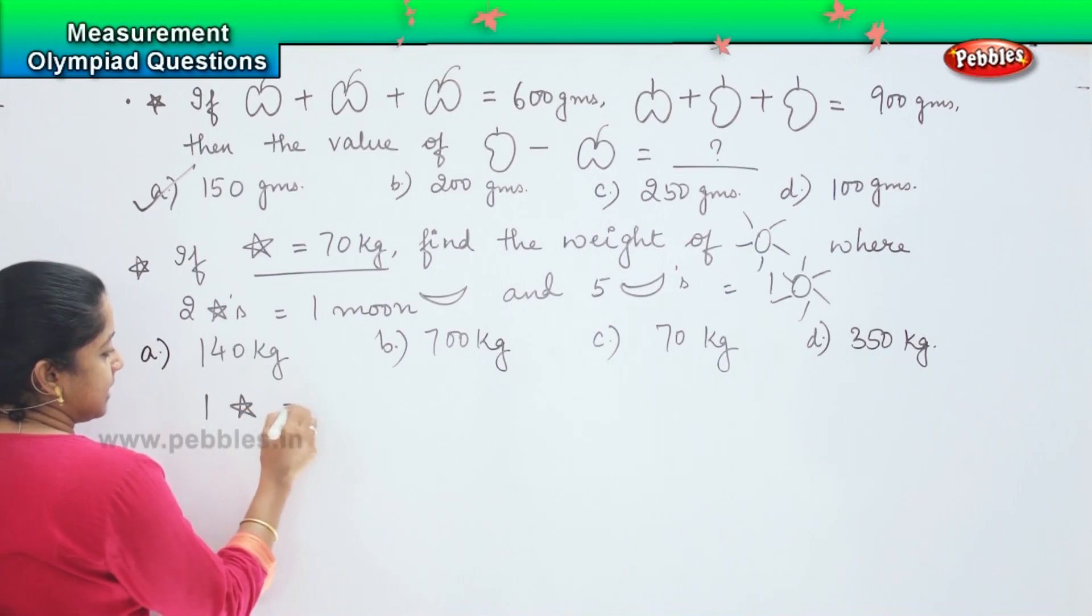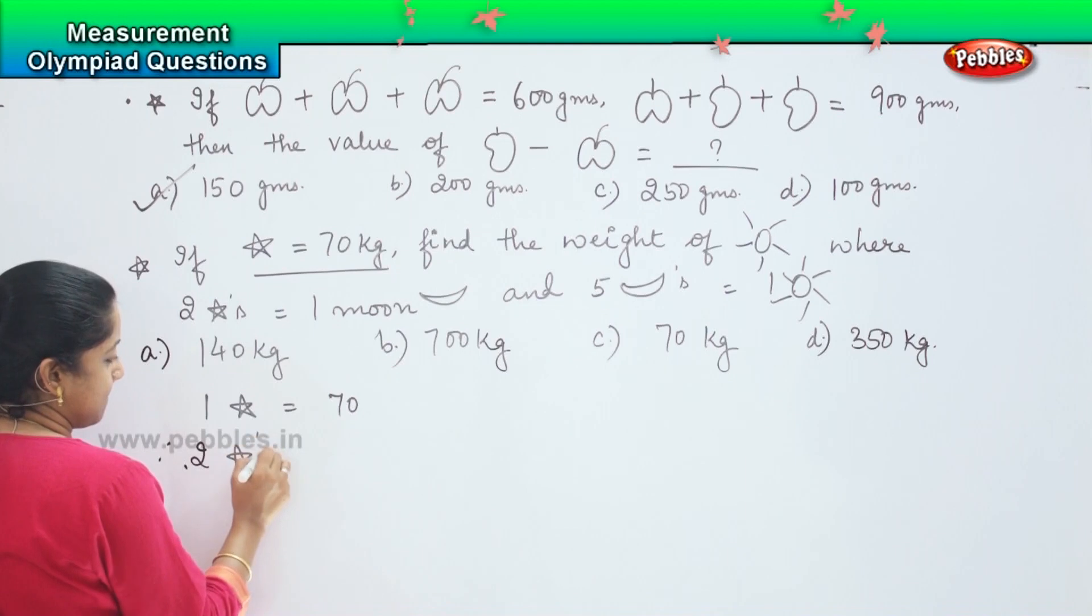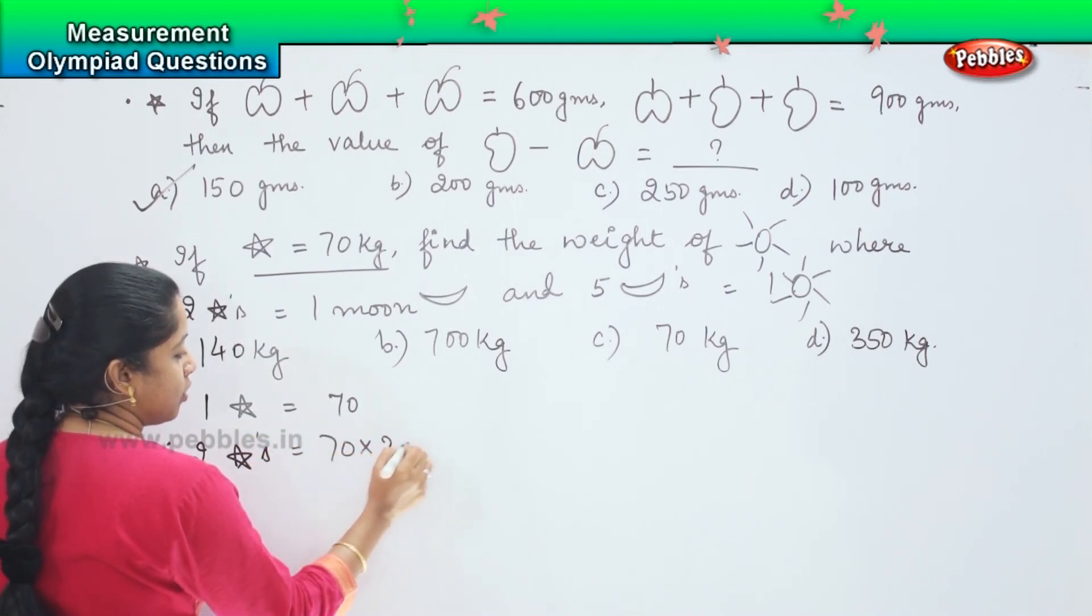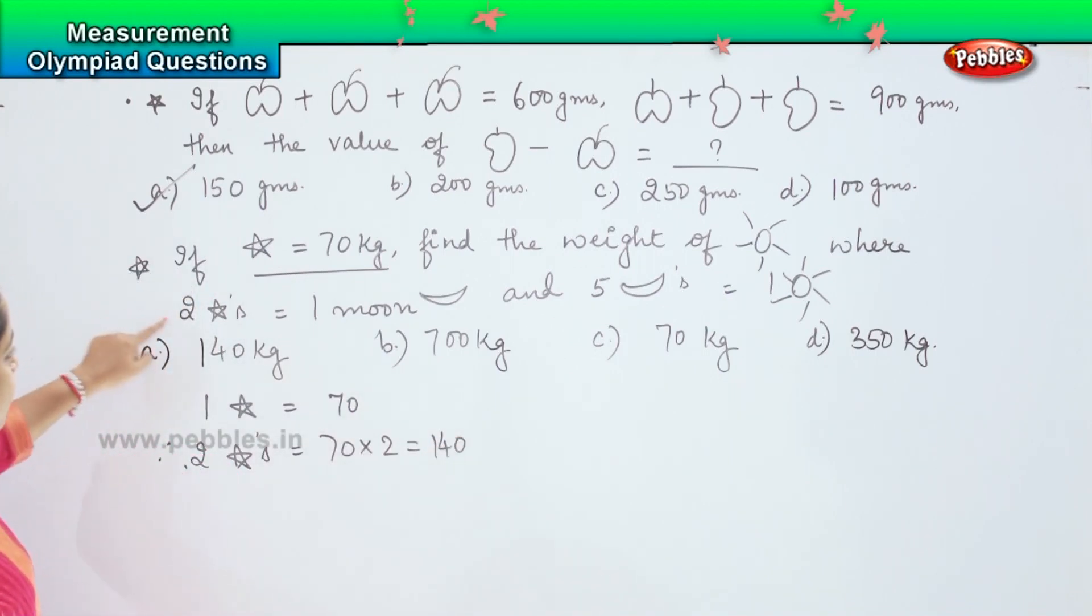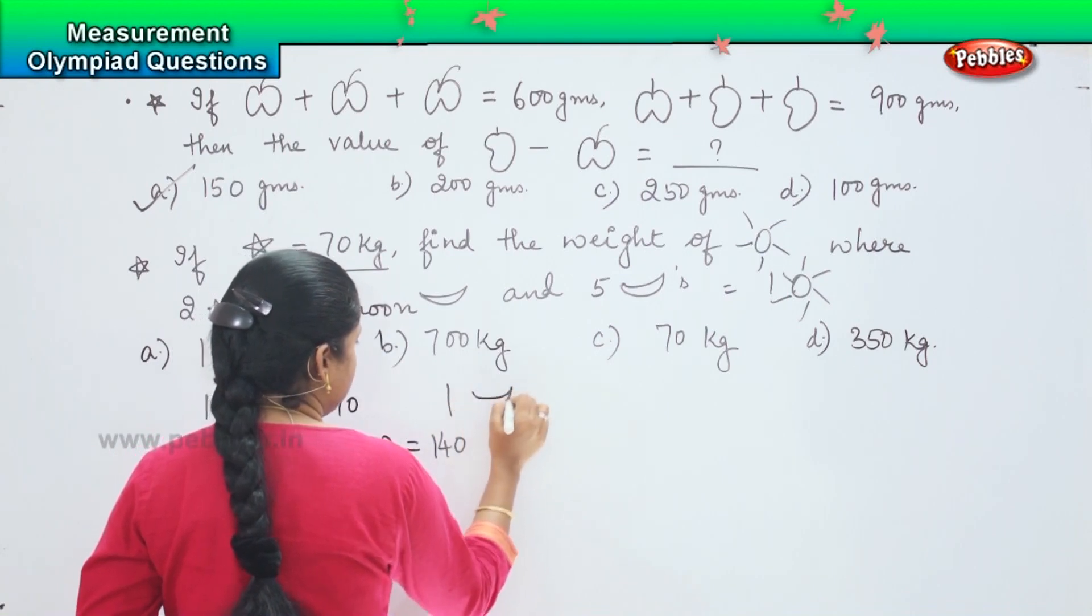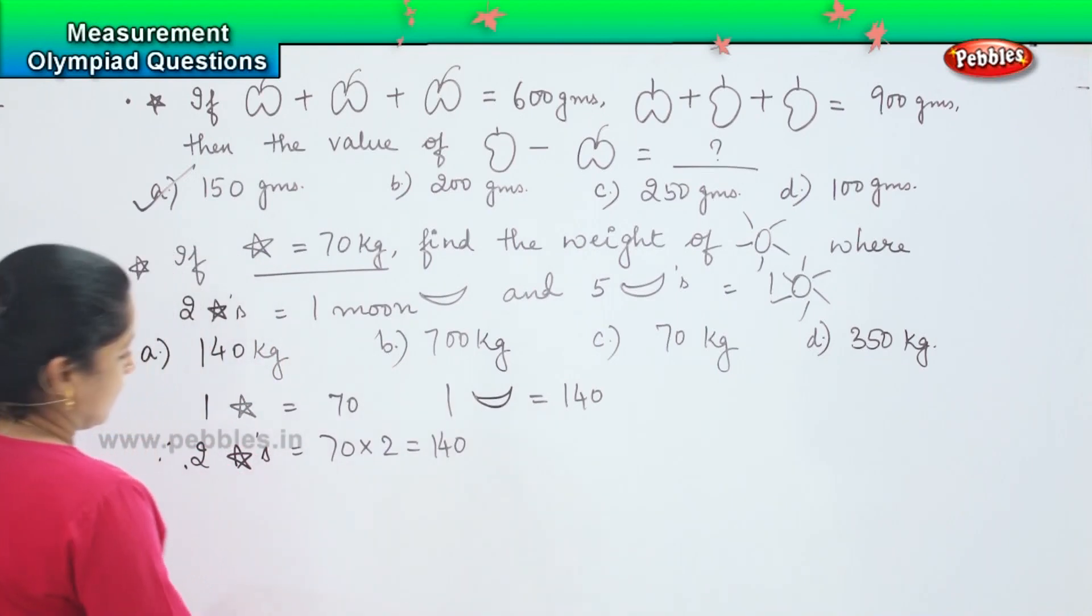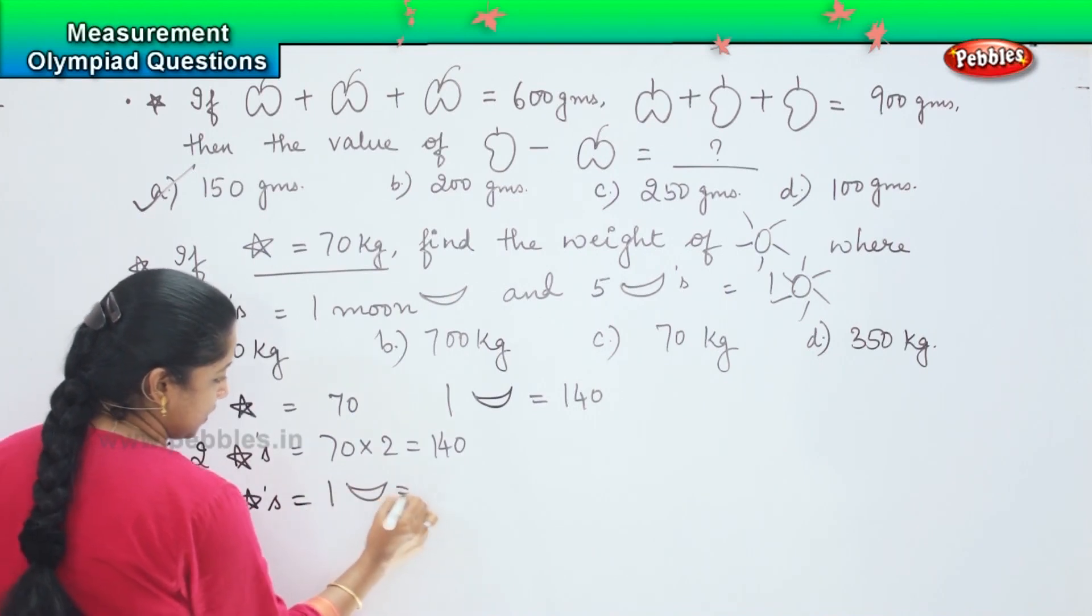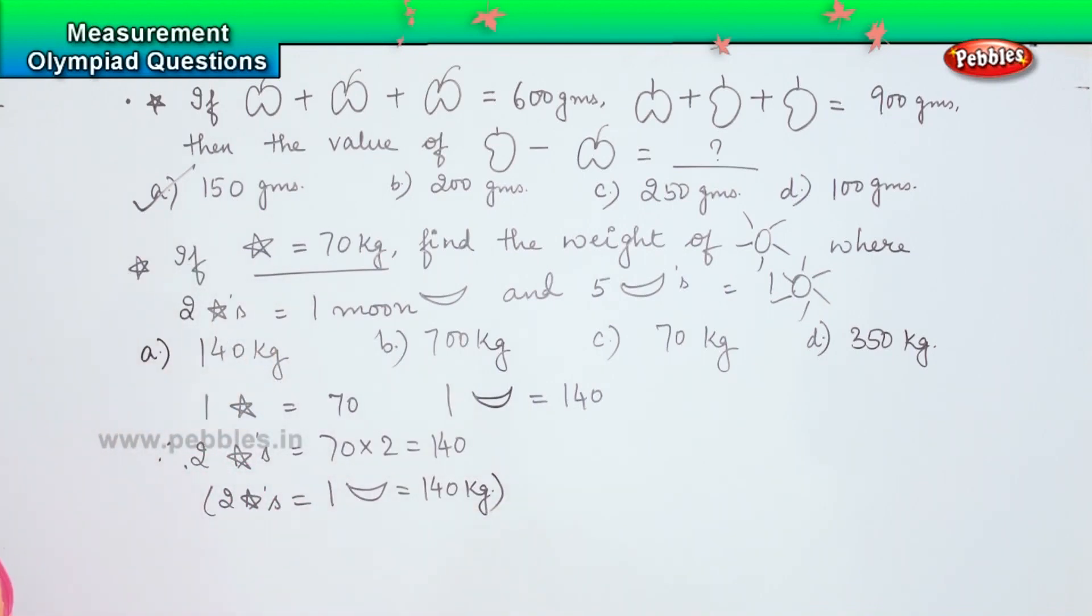If one star equals 70 kilos, what is the value of two stars? It should be 70 into 2 which equals 140. Here they have given that two stars equals one moon. So now I have got the value of one moon equals 140 kilos.